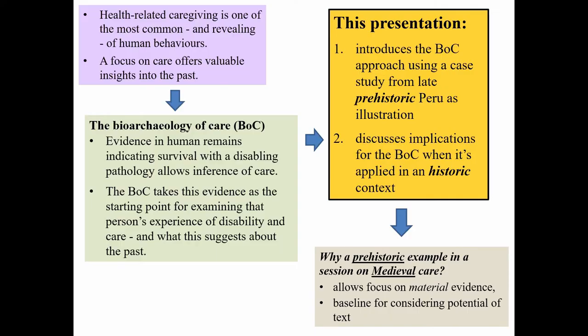Caring for those who are disabled by disease or injury is one of the most common, complex, and demanding of behaviours. If we can untangle the components of this care, it can tell us a lot about the people who are giving it and about the society in which it was given. Where evidence in human remains indicates that a person lived with a disabling pathology, it suggests they were probably cared for by those around them.